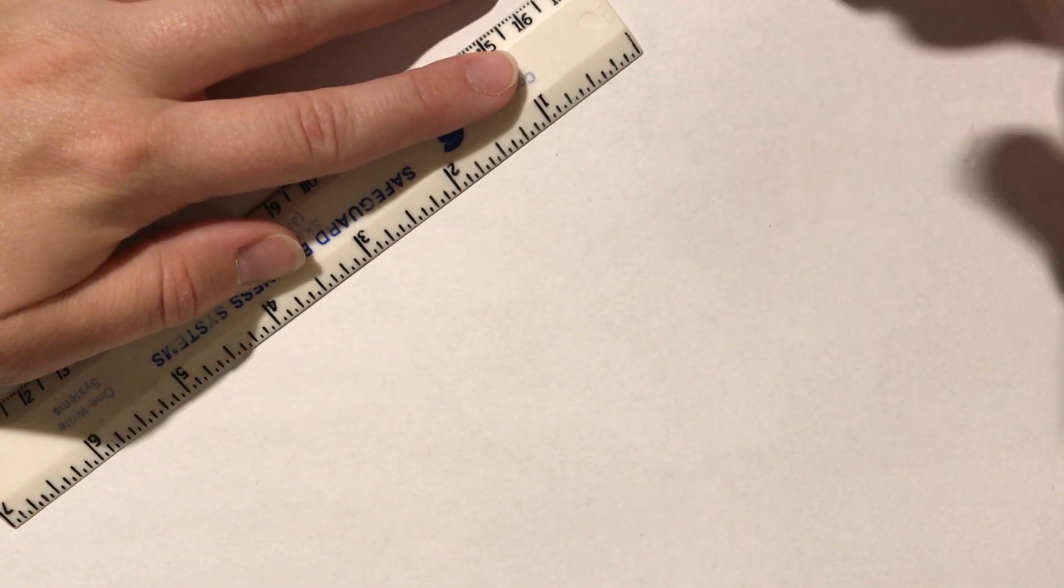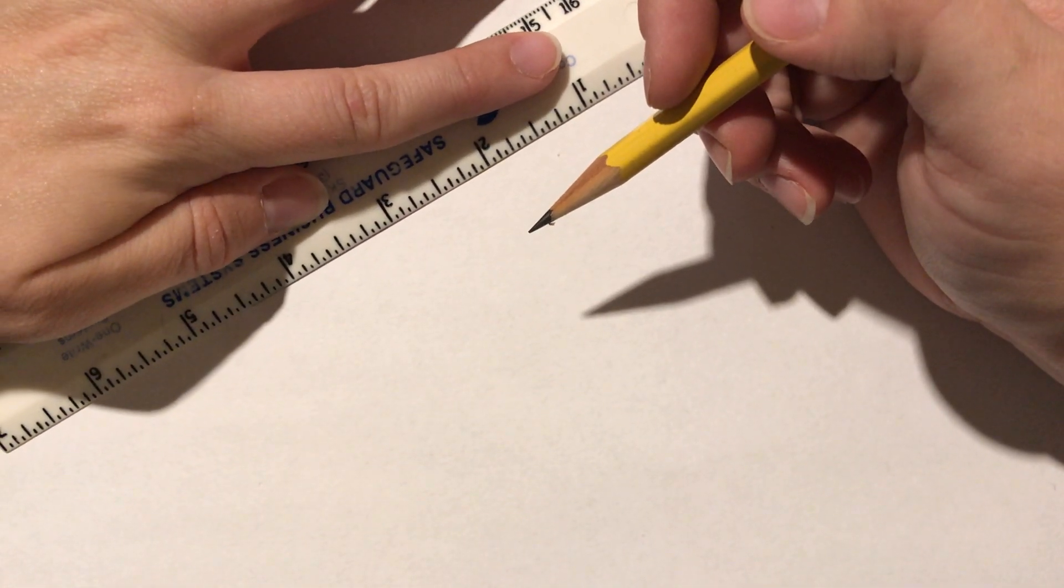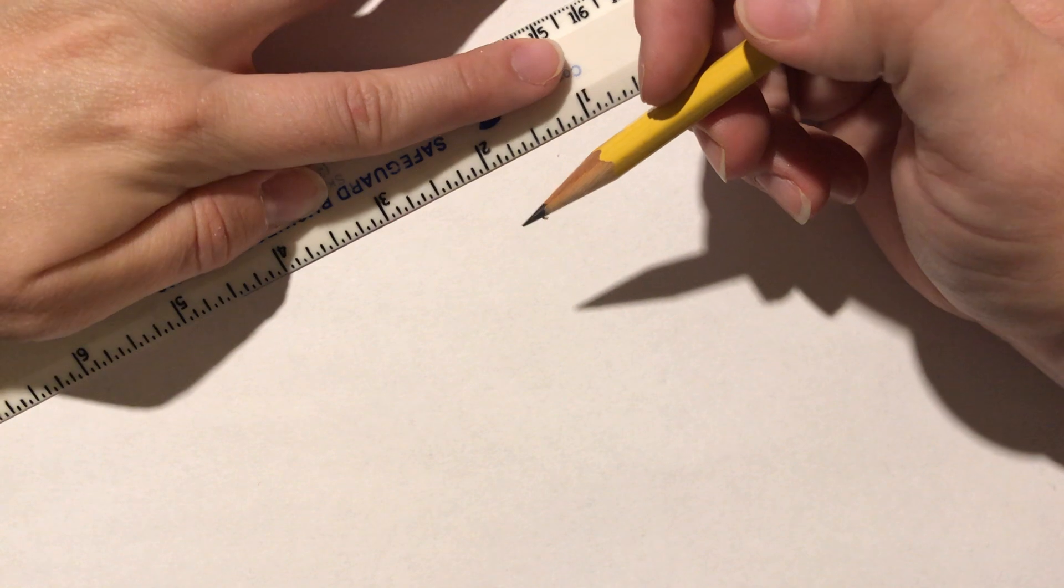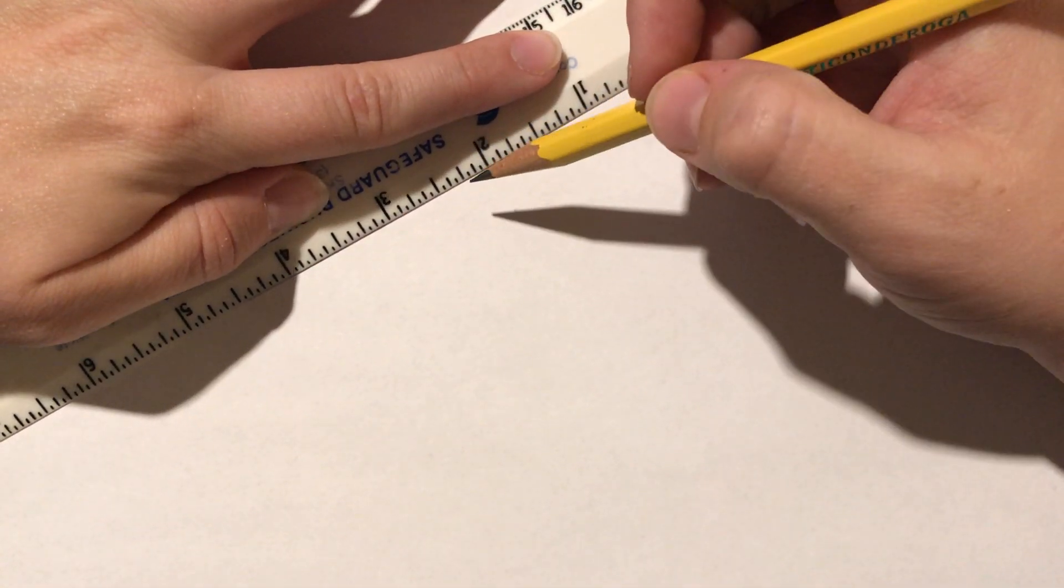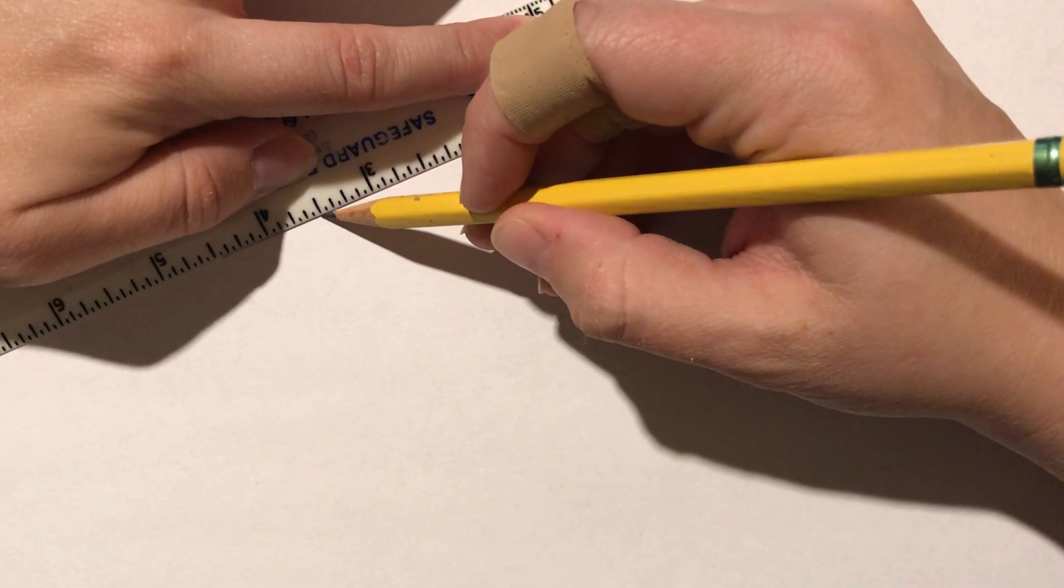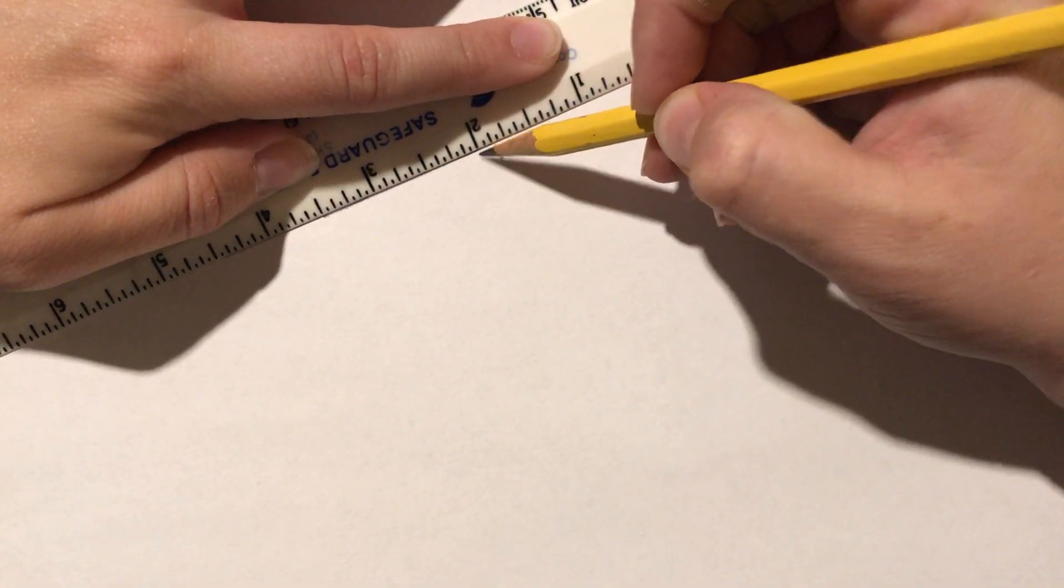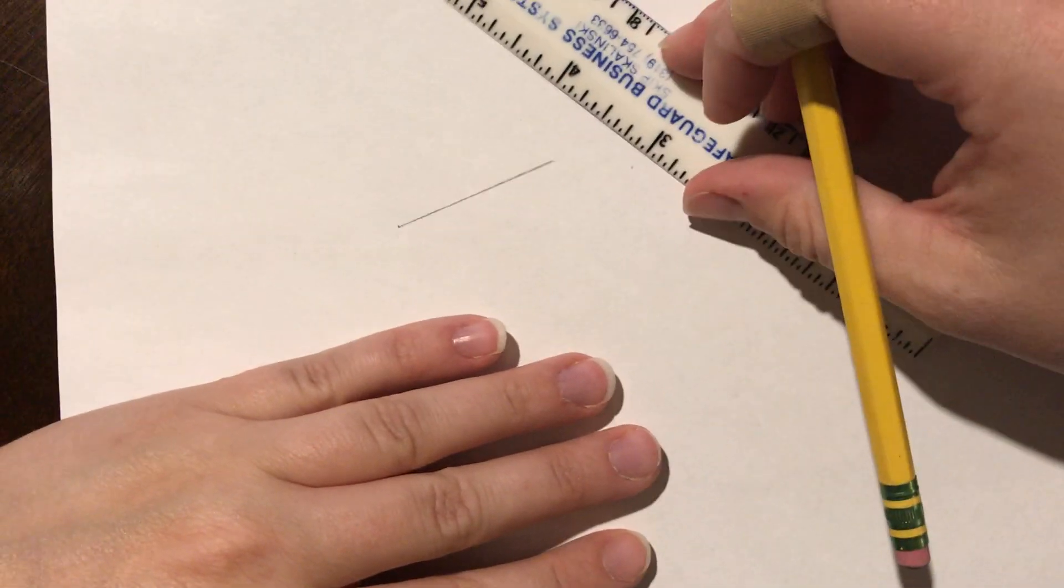So we're going to take a ruler or a straight edge, you'll probably have a protractor. I'm going to make this go out, make it go like this. I'm just going to do like an inch and a half this way, and I'm going to go an inch and a half the other way as well.